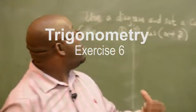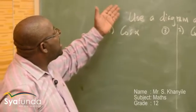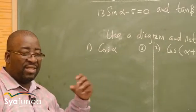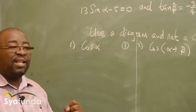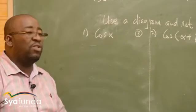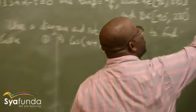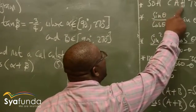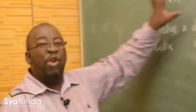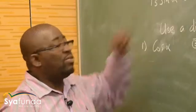Let's check how we use a diagram to solve the problems on trigonometry. Remember, you're given that 13 sine alpha minus 5 equals 0. Sine theta is a ratio — something over something. To understand the definition of sine theta, I've got to put it into a fraction form. We need to put it back into its original state, where sine alpha is equal to something over something.